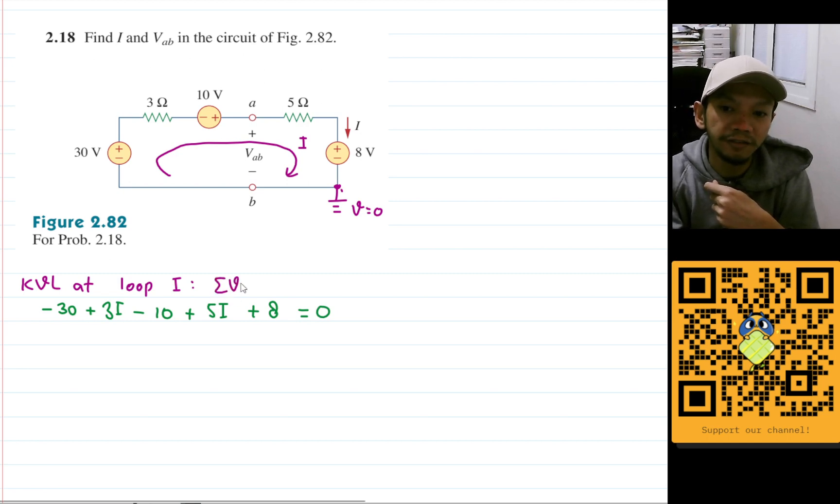All of that will equal to zero because KVL says that the sum of all voltages in a loop will equal to zero. Now let's simplify this equation. 3 plus 5 will be 8, so we have 8I minus 30 minus 10 will be minus 40, minus 40 plus 8 will be minus 32, and that will equal to zero.